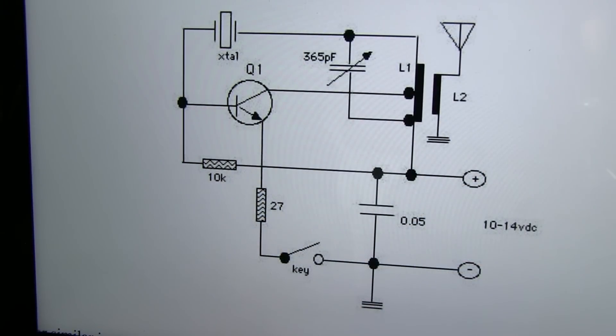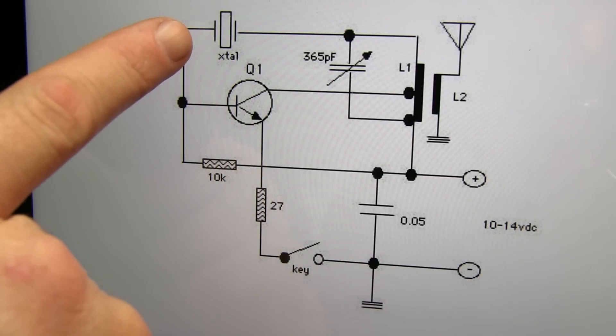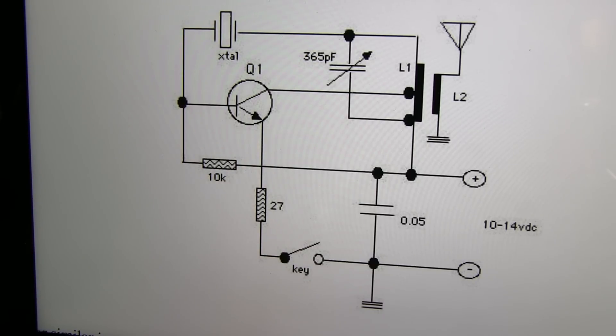You'll find lots of information on the Michigan Mighty Might by simply using Google. And this is just one of the images I found of a very simple schematic. You can see it's just a simple general purpose NPN transistor, the crystal of your choice, in my case the Colorburst crystal, a 10K resistor, and a 27-ohm resistor.